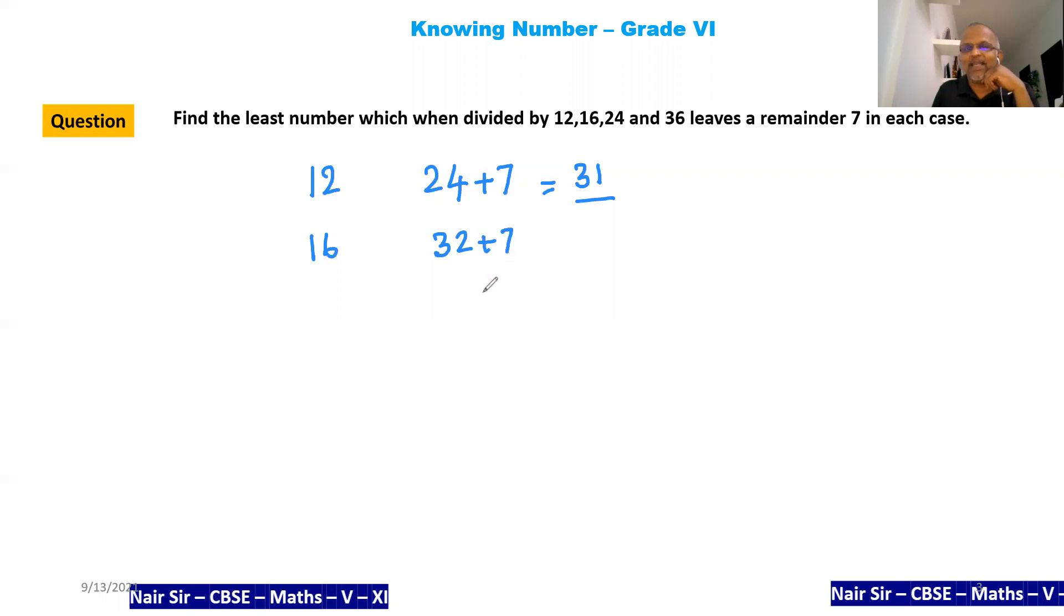Look at the question now. What are they asking you? They are asking you to find the least number which has to be divided by all of these numbers and the remainder has to be 7. Understand the question and then only you will be able to remember it.